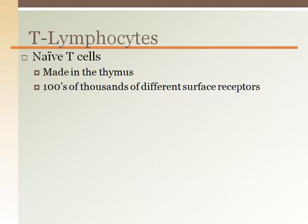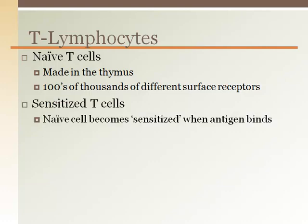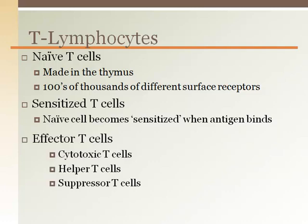There are also a number of different types of T lymphocytes. Naive T lymphocytes are matured in the thymus and have hundreds of thousands of surface receptors that may potentially combine with an antigen. The sensitized T cells are ones that have encountered an antigen. Effector T cells are the cells that are working to fight the antigen, and there are three types: the cytotoxic T cell directly binds and kills the antigen, helper T cells work to mobilize other immune responses such as B cell mobilization, and suppressor T cells prevent overactivity of the immune system.